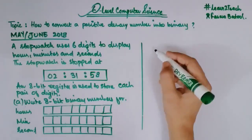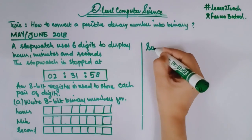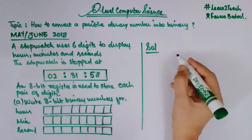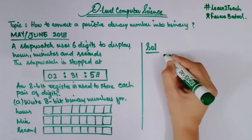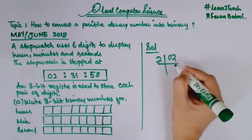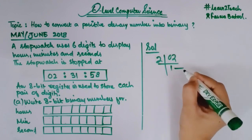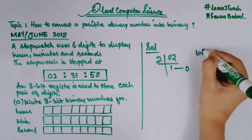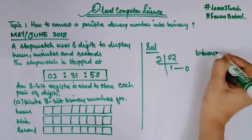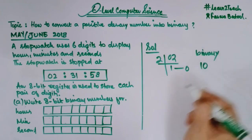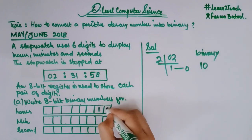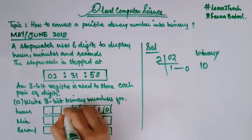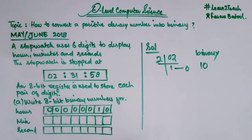Let me take the hours value first, which is 02. Taking the LCM of 2 by 2: 2 divided by 2 gives 1 remainder 0. So the binary conversion is 10, which in the 8-bit register is written as 00000010. All the remaining bit positions are filled with 0.